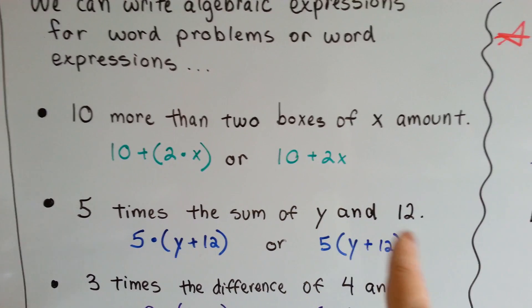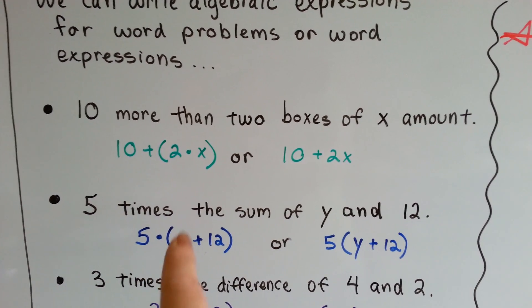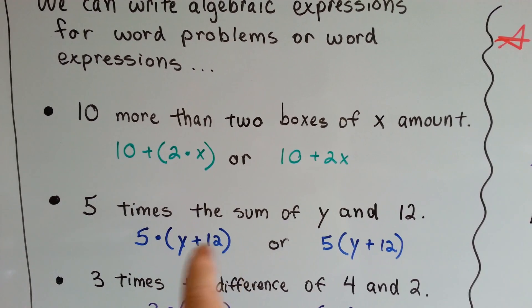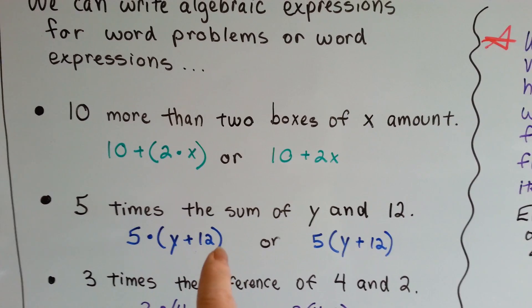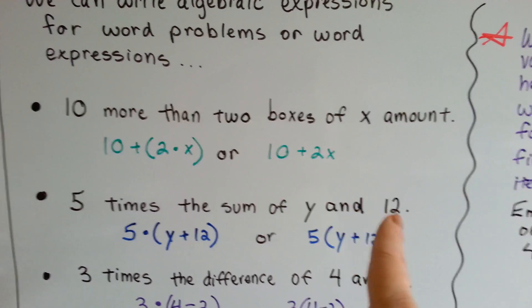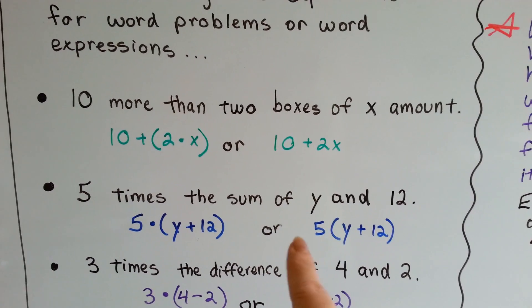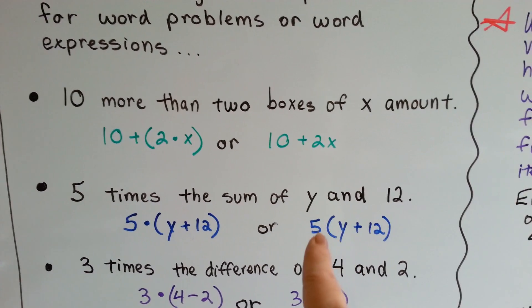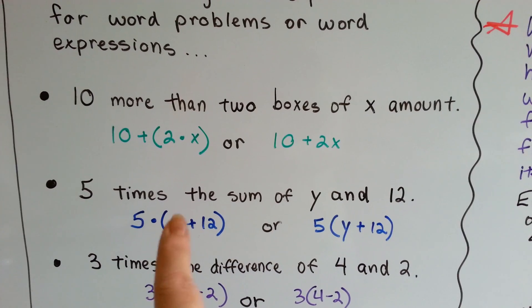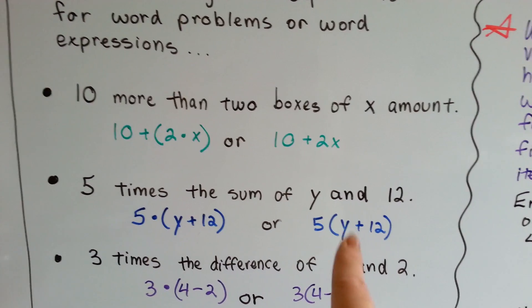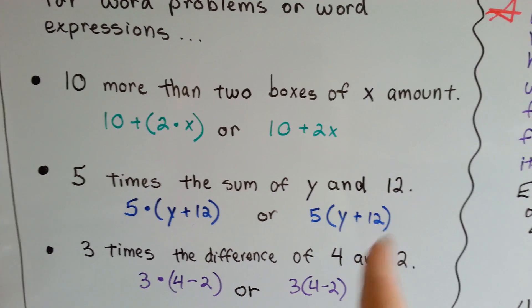5 times the sum of y and 12 would be a 5. And then we could put a dot there if we wanted to. And then we'd have y plus 12. Because we wouldn't want to do 5 times y and then add 12. It's the sum of y and 12. So that tells us to do that in a parentheses. We could also do it with just the 5 next to the parentheses, which is usually how you're going to see it written. This is not seen very often. This is what you're going to see most of the time. 5, parentheses, y plus 12.